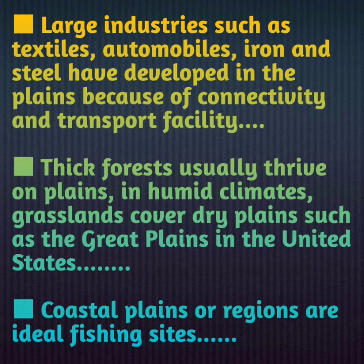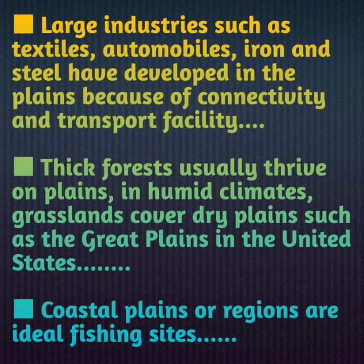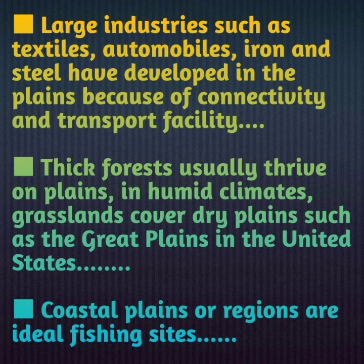Thick forests usually thrive on plains in humid climates; grasslands cover dry plains — such as the Great Plains in the United States. In plains, vegetation is very abundant. If it is a humid plain where there is more rainfall, you will see dense forests; but if it is a dry plain where there is less rainfall, you will see grasslands. For example, the Great Plains in the United States have less rainfall, so there is tall grass but no dense jungle.